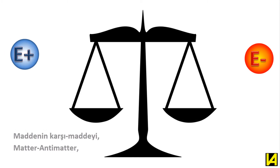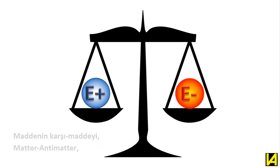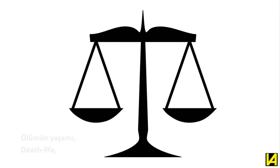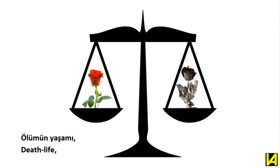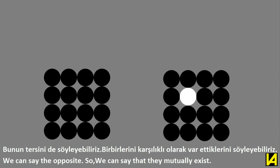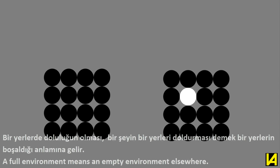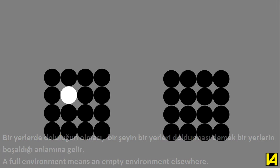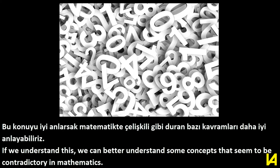Matter and antimatter, positive and negative, death and life, hunger and fullness — concepts such as these mutually balance each other. We can say that they mutually exist as opposites. A full environment means an empty environment elsewhere. If we understand this, we can better understand some concepts that seem contradictory.